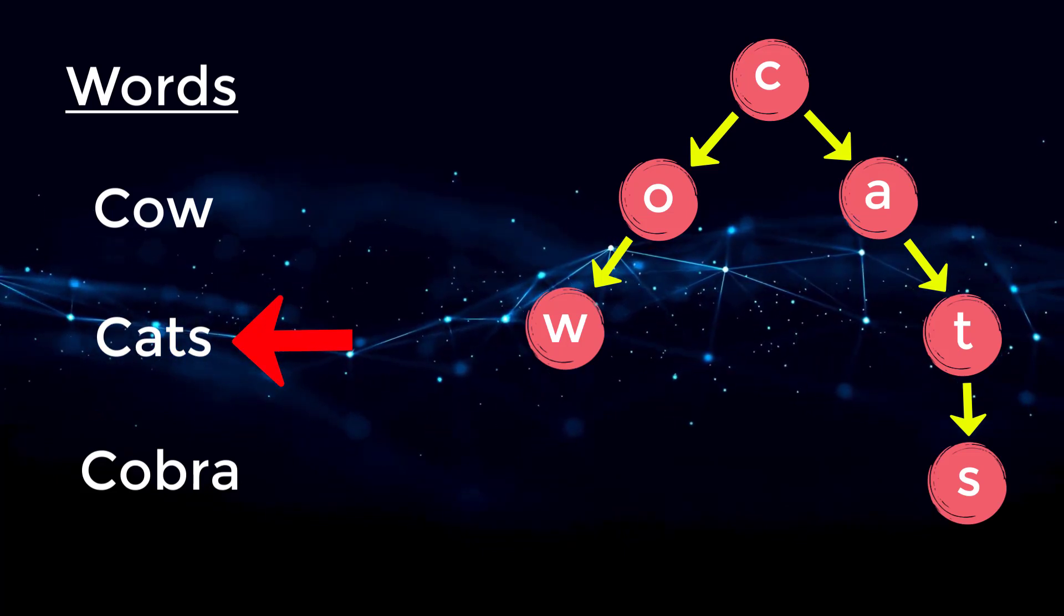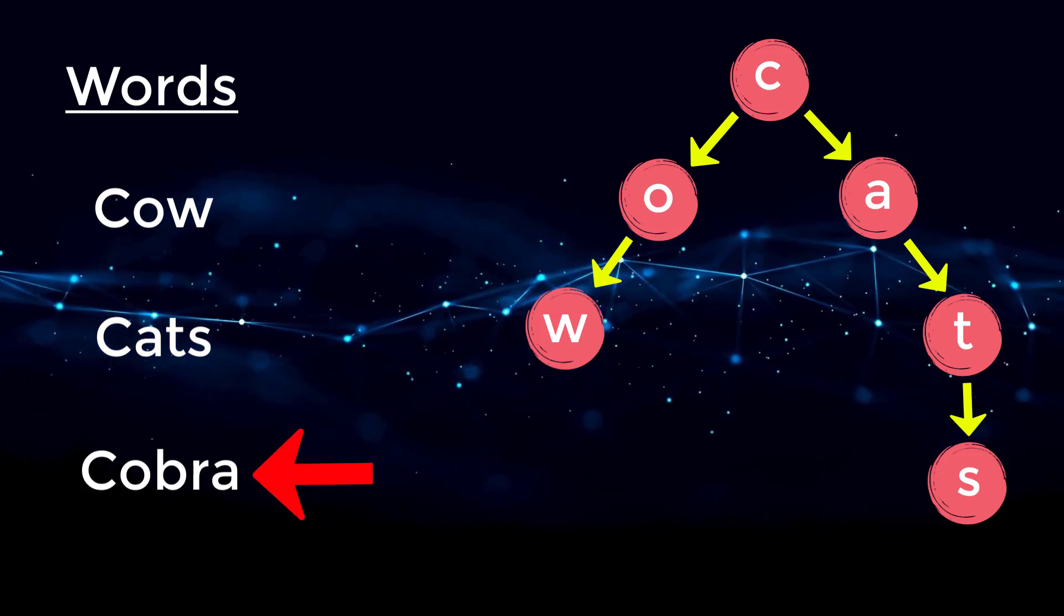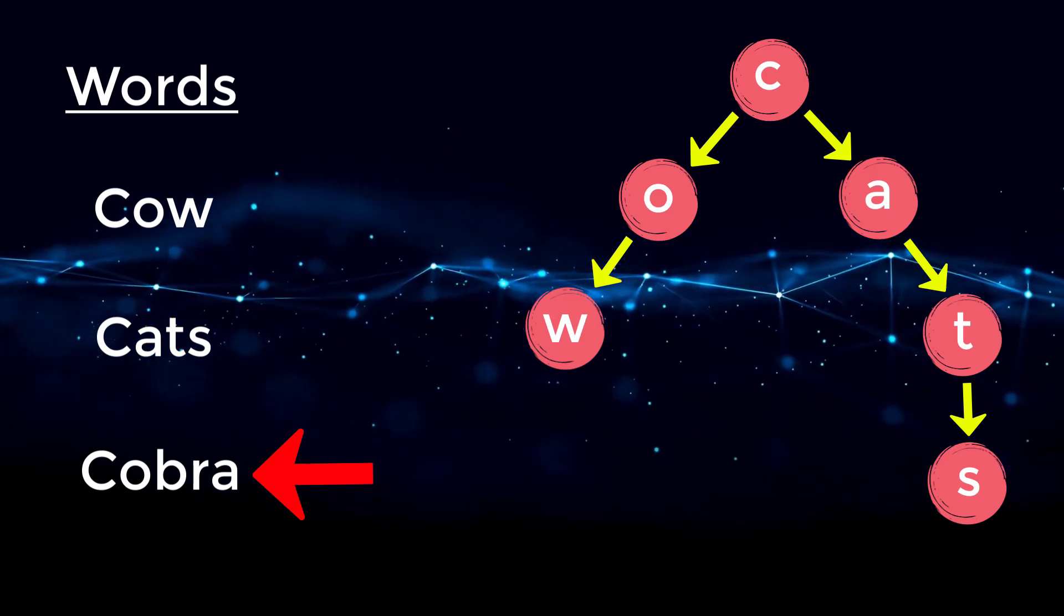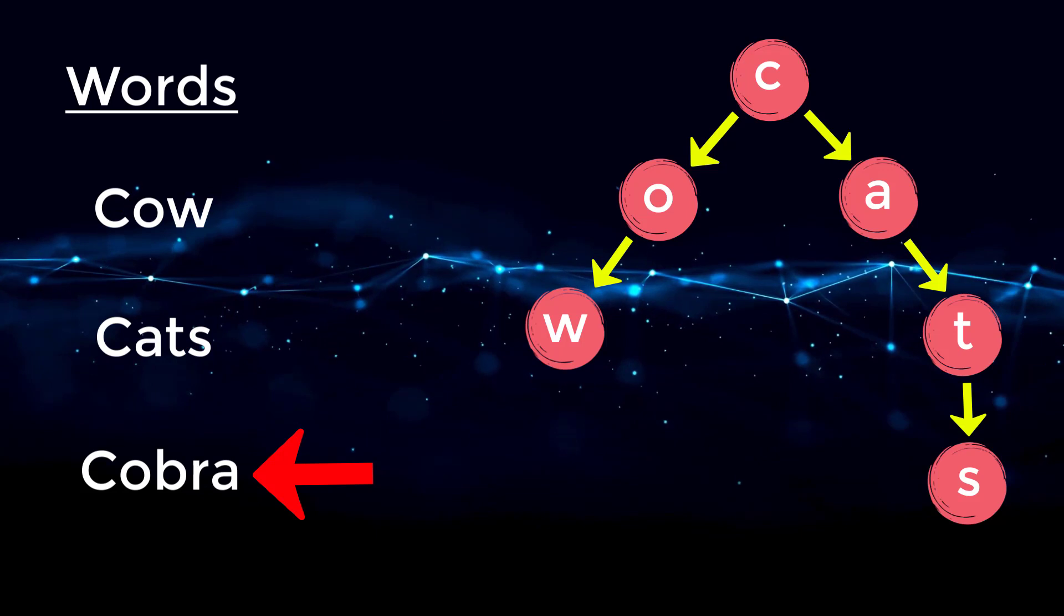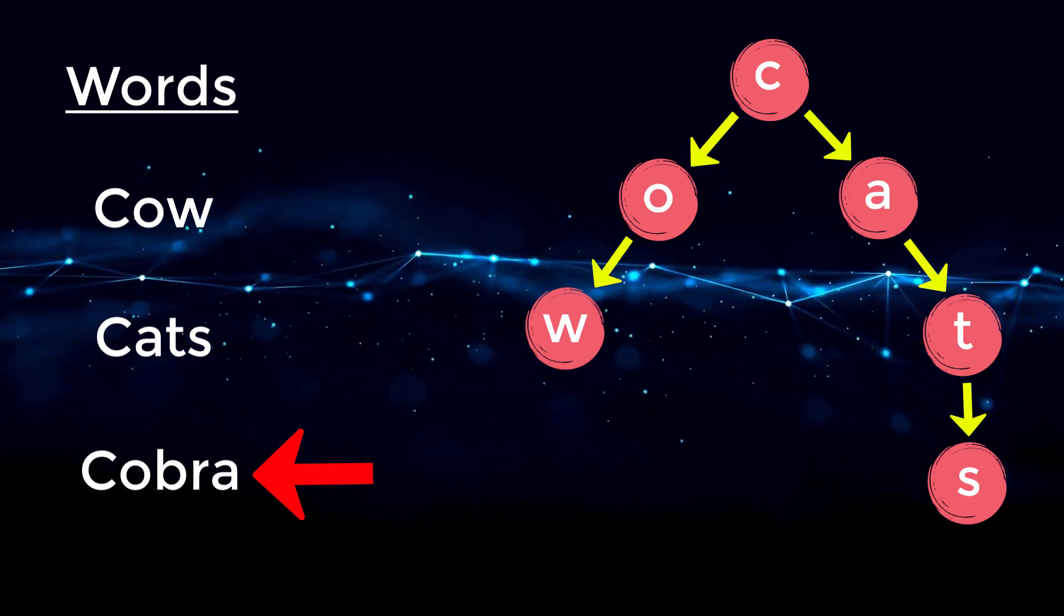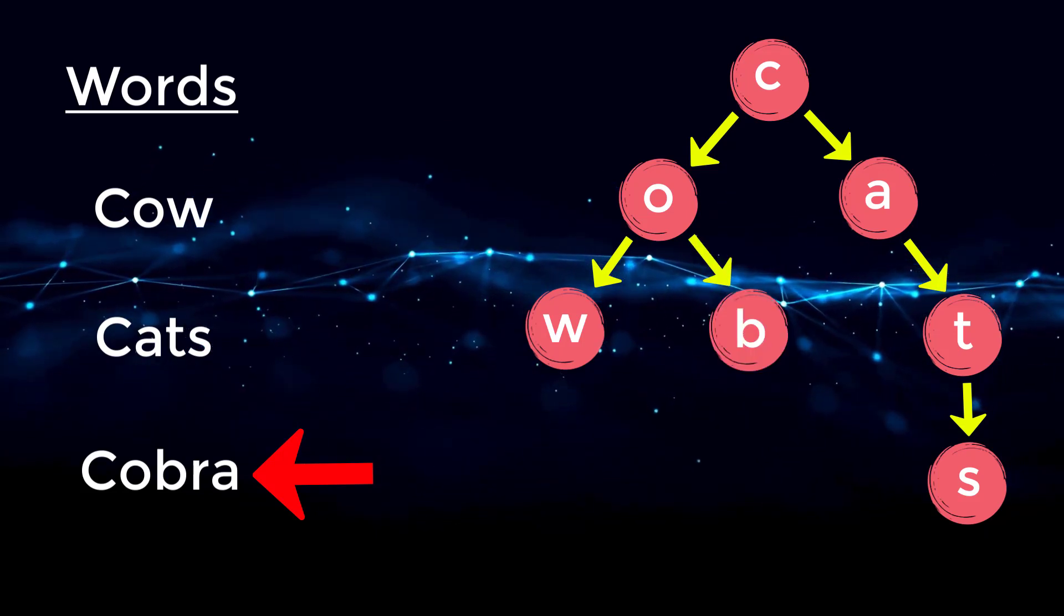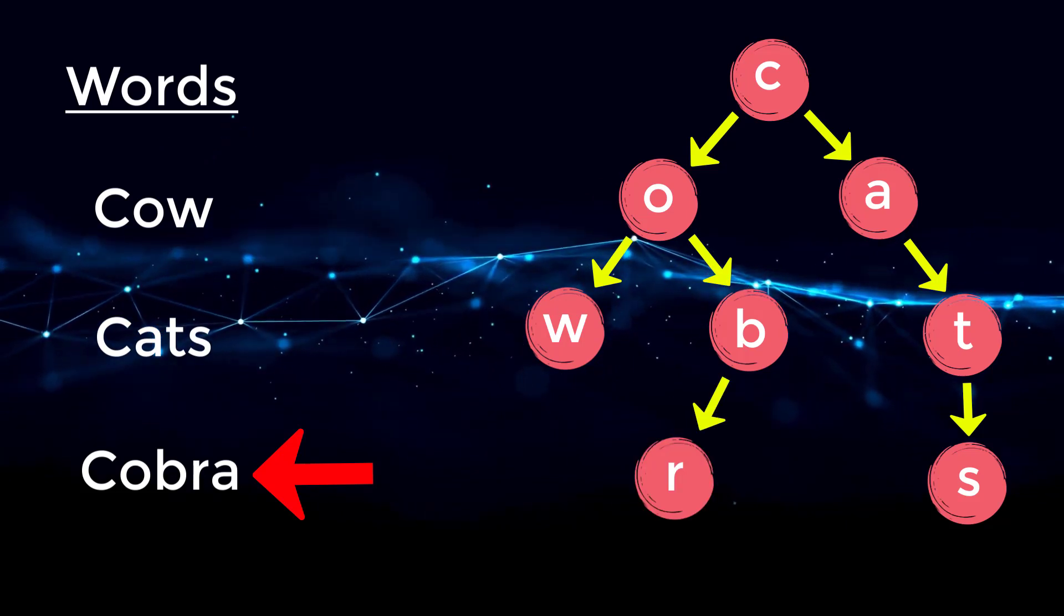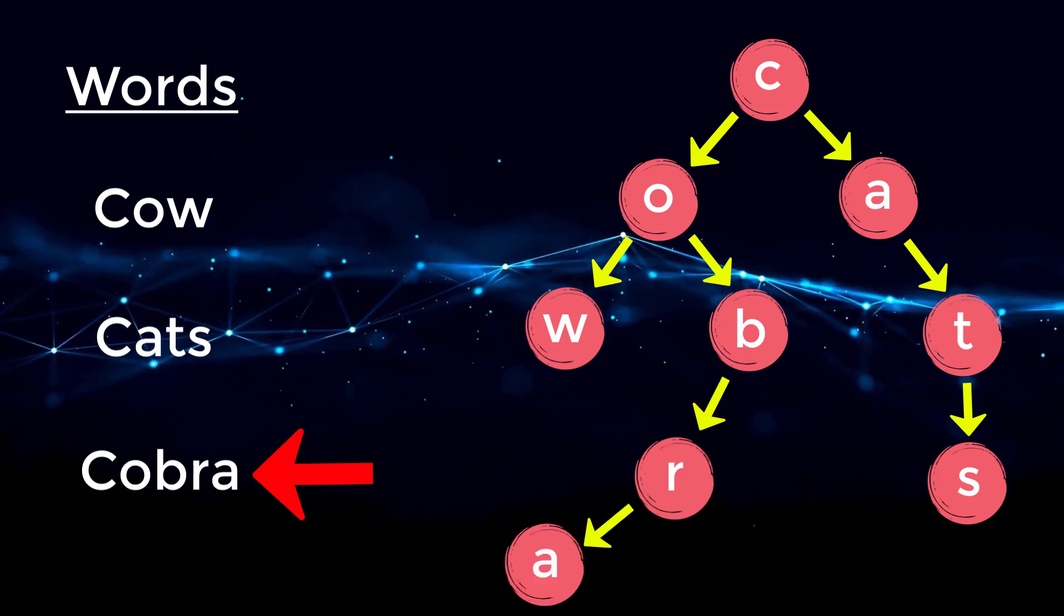And then finally, we go to the word cobra. Once again, we already have a node for C. We move to the letter O, we already have a node for O, so we move to B. Then we have to create a node for B, connect it to letter O, create a node for R, connect it to letter B. And then finally, create a node for A, and connect it to letter R.